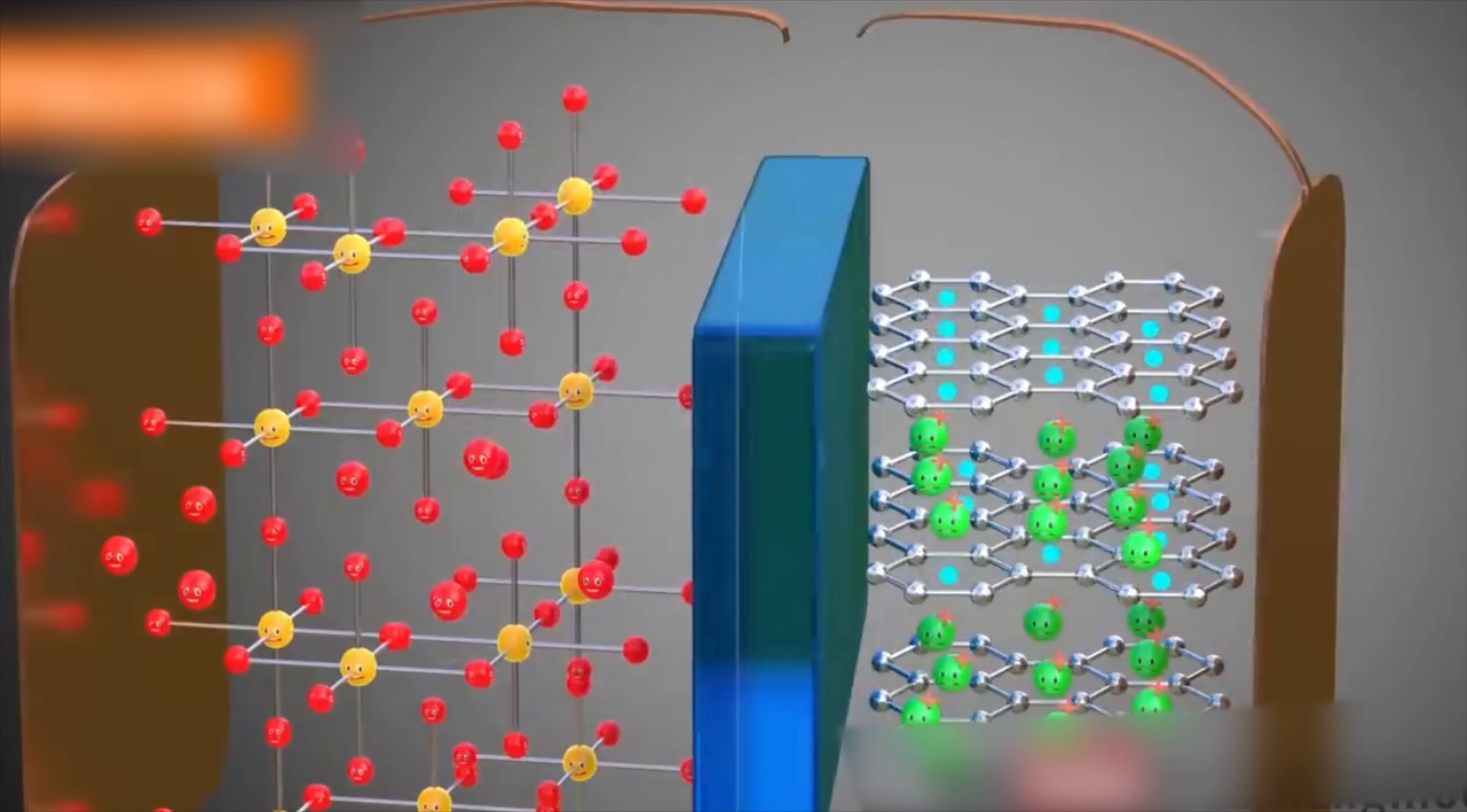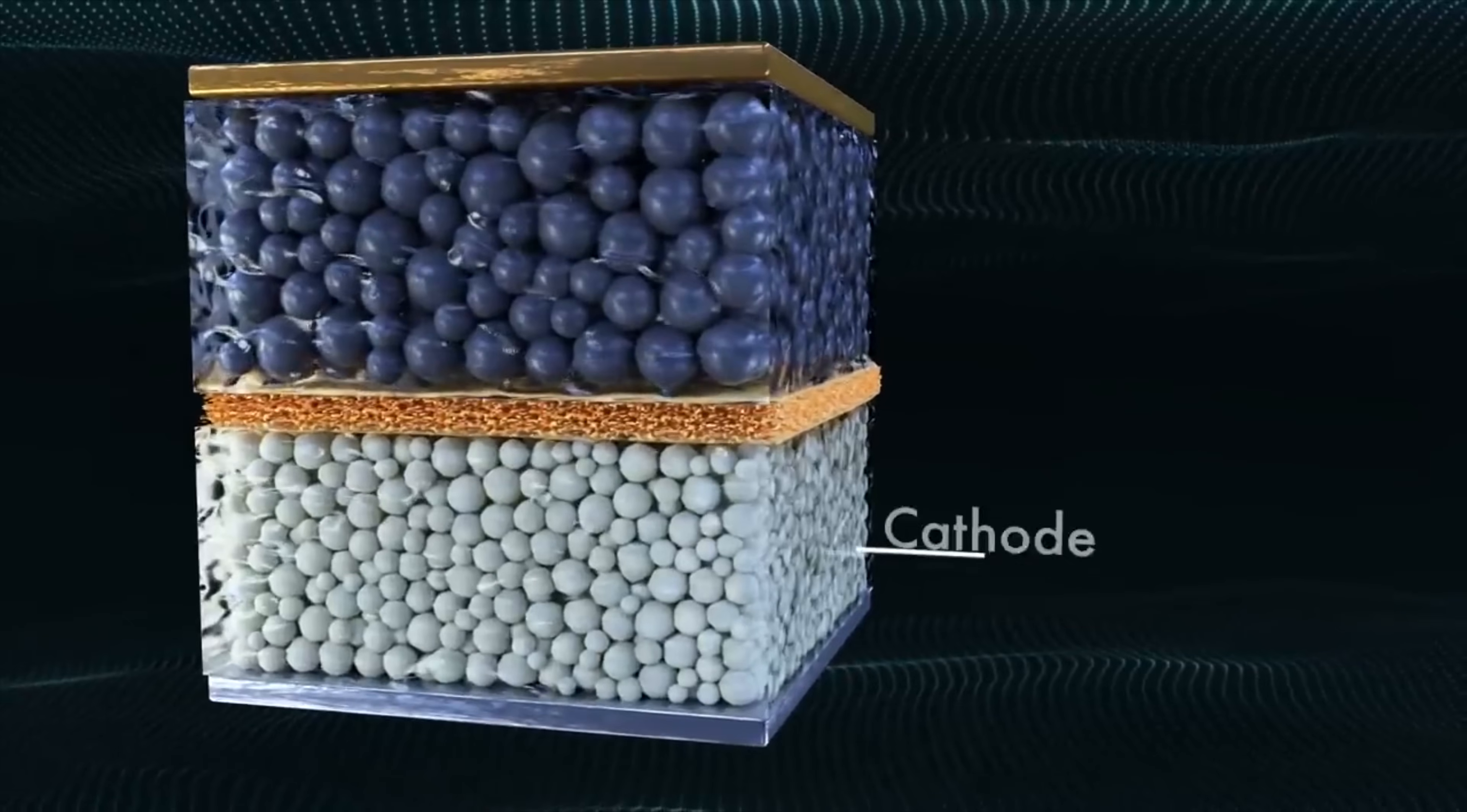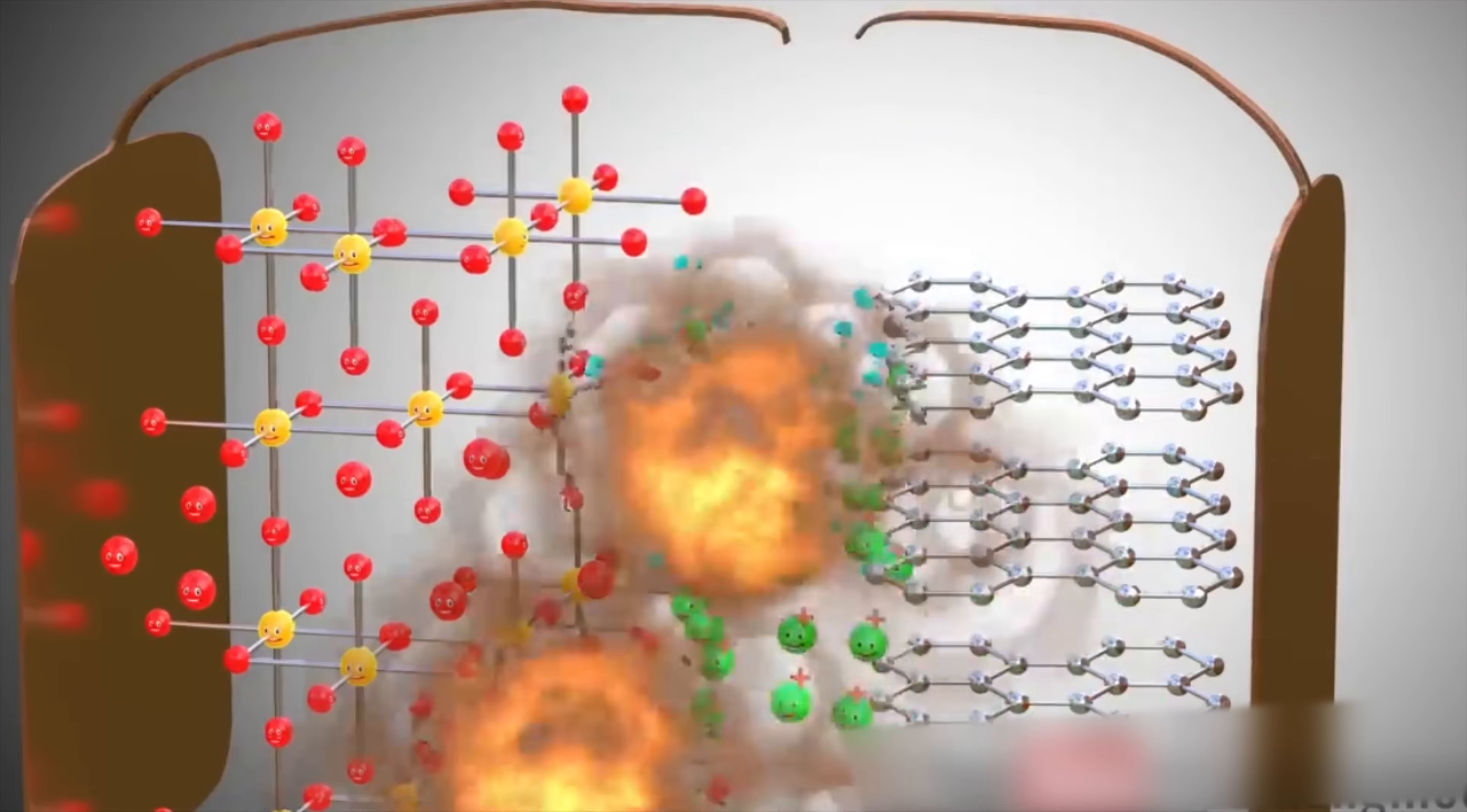The battery also uses a solid-state electrolyte, which is the medium that allows ions to move between the electrodes. Unlike conventional lithium-ion batteries, which use liquid or gel electrolytes that can leak or catch fire, solid-state electrolytes are more stable and resistant to high temperatures and pressures.